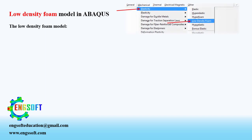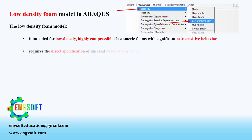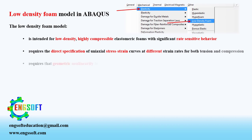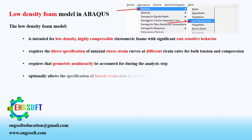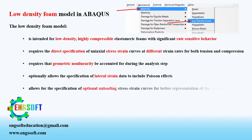The second model, low-density foam, is mainly intended for low-density, highly compressible elastomeric foams which have significant rate-sensitive behavior. The model requires concrete specification of uniaxial stress-strain curves for both compression and tension at different strain rates. Geometric non-linearity must be accounted for during the analysis step. By default, this model assumes a Poisson's ratio of 0, though non-zero Poisson effects can be specified through including lateral strain data. It also allows for the specification of optional unloading stress-strain curves for better representation of hysteretic behavior and energy absorption during cyclic loading.